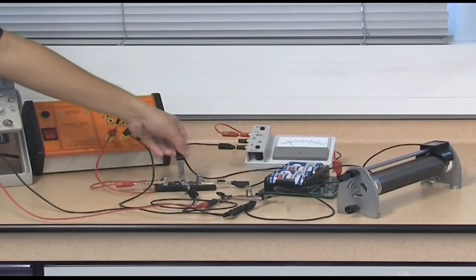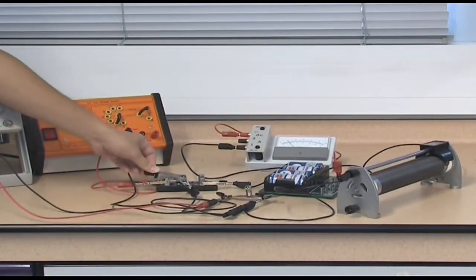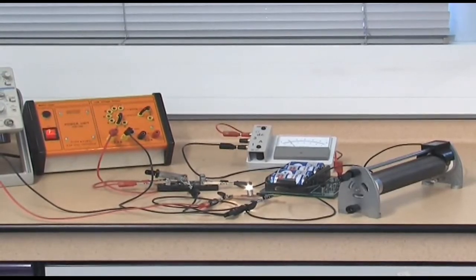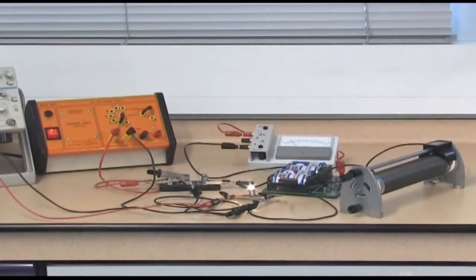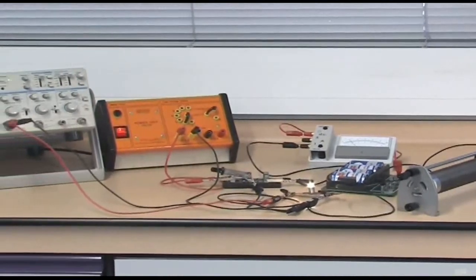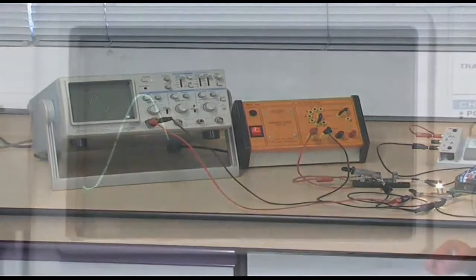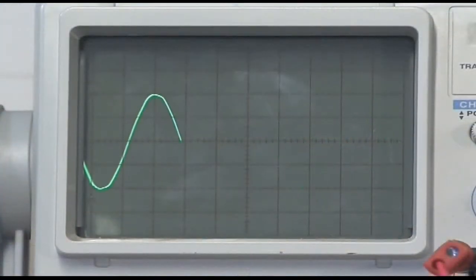Set the switch to the AC power supply and set the output voltage to 3 volts. Apply a sinusoidal alternating voltage to the light bulb so that it lights up with a certain degree of brightness. Read the peak-to-peak value of the voltage shown on the CRO screen.